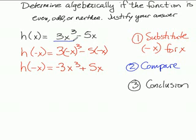3x cubed and negative 3x cubed—both of those terms are exactly opposite in sign. Now I'm going to go to my next term, negative 5x and positive 5x. Again, those terms are exactly opposite.